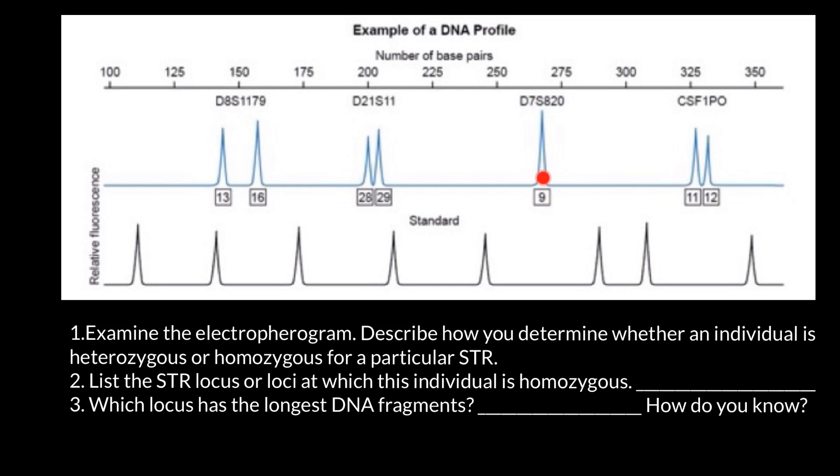That means that actually on both chromosomes we have the same size alleles. That's why we have a spike here that is greater than in the other loci. Now you see this reference ladder and here are the sizes of these alleles. Each spike represents an allele.